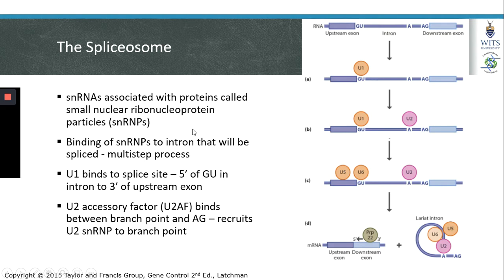The first step in RNA splicing involves binding of SNRPs to the intron in a multi-step process. Intron removal begins with binding of the U1 SNRP to the 5' splice site, specifically between the 3' end of the upstream exon and the 5' end of the beginning intron. After U1 SNRP binding, the U2 SNRP is recruited to the A residue or branch point via binding of U2 accessory factor, U2AF, which first binds between the branch point and the AG residue, then recruits U2 SNRP to the branch point itself.